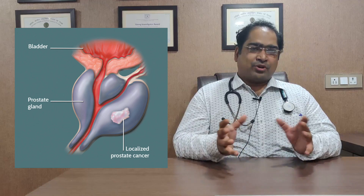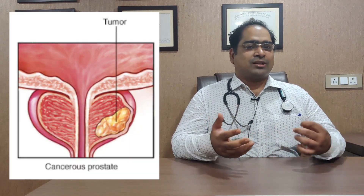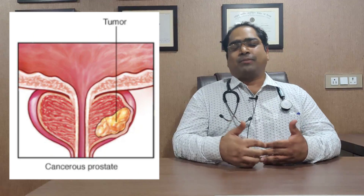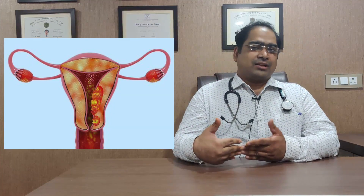In males, there is an organ called the Prostate, which grows and develops under the influence of the male hormone Testosterone. In some cases, cancers develop in this normal prostate tissue, and those cancers grow and spread under the influence of Testosterone. So the three main hormone-sensitive cancers in the body are Breast Cancer, Prostate Cancer, and Endometrial (uterine) cancer.